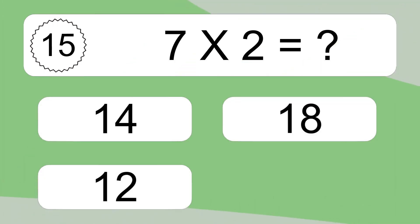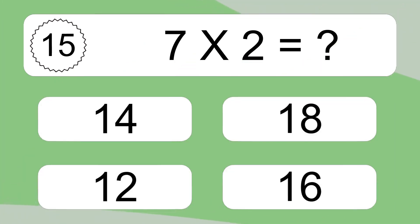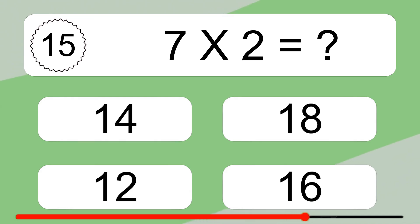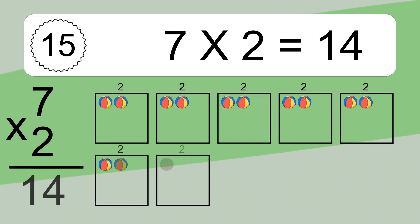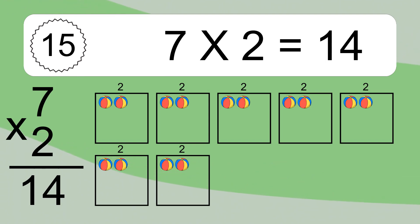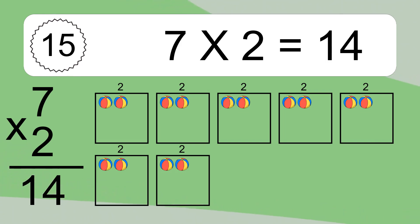7 times 2 equals what? 7 times 2 equals 14. We have 7 boxes, and each box has 2 colorful balls inside. If you count all the balls in all the boxes together, you will have 7 times 2 balls. This equals 14 balls.